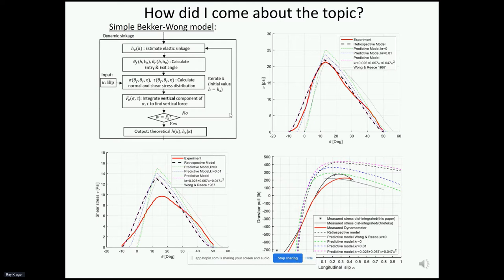The idea came to me when I implemented a simple Bakker-Wong model for rigid wheels on soft soils. The process starts by estimating the elastic sinkage, then calculating the wheel entry and exit angle, followed by estimating normal and shear stress distributions under the wheel. Integrating these gives forces in the vertical and horizontal directions. If the vertical force matches the applied load, equilibrium is reached; otherwise we iterate until equilibrium is reached.